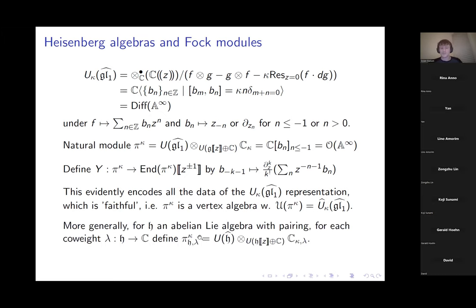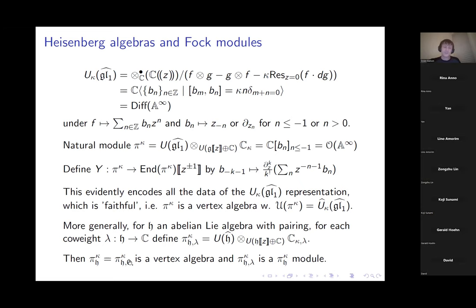There's a more general family of modules defined by the same induced module construction but where one picks a coweight of a general abelian Lie algebra with a pairing — not just gl₁. You can induce a module where the zeroth copy of h inside the formal power series acts by λ, giving a module π_λ^{κ}. For a general abelian Lie algebra with pairing there'll be an analogous heisenberg vertex algebra.